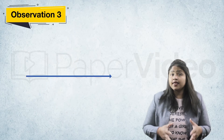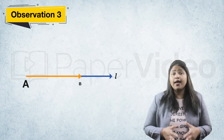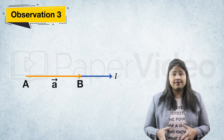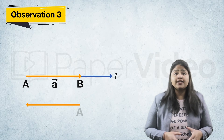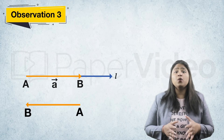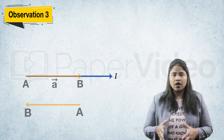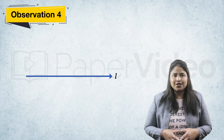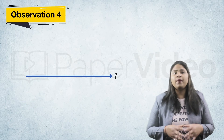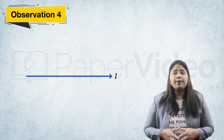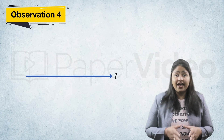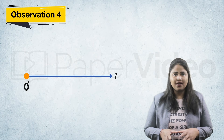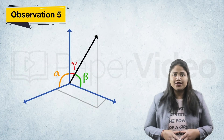According to the third observation, if theta equals 0, then the projection vector AB will be AB itself. If theta equals pi, then the projection vector AB will be BA. According to the fourth observation, if theta equals pi by 2 or 3pi by 2, then the projection vector AB will be zero.